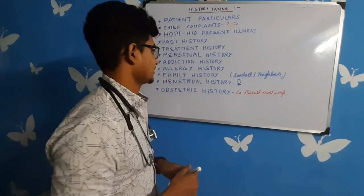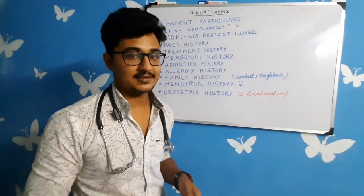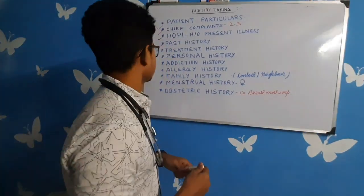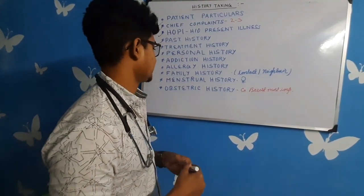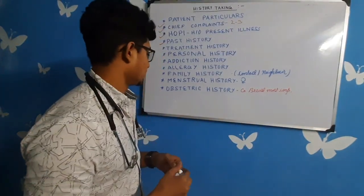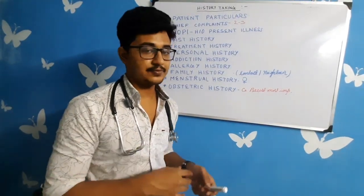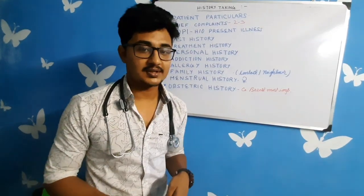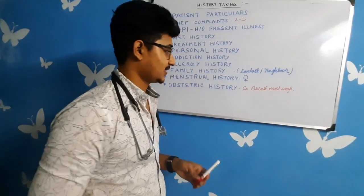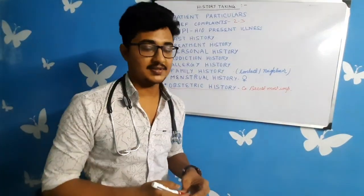Then is the addiction history — detailed history like smoking in packets per year, or alcohol in grams per day. Then is the allergy history, whether present or not. Then is the family history — high-risk history can also be taken. Then is the menstrual history, which is necessary in females. Obstetric history is not always necessary but in obstetrics cases you have to take it. In breast cancer cases it is also taken, because breast cancer depends on parity — whether the patient conceived before or after 30 years, and whether she continued breastfeeding, as these are risk factors.